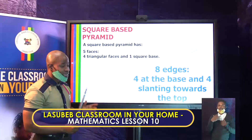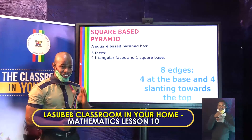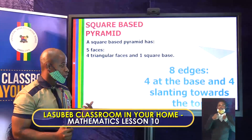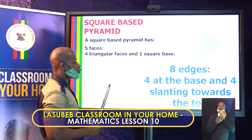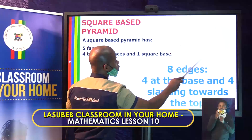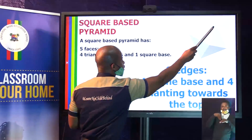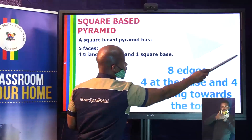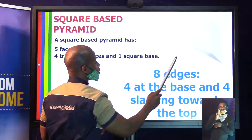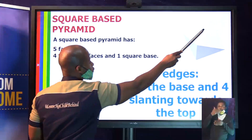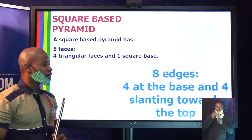It has eight edges. Don't forget that the edges are the straight lines you can find on the shape. From the base at the back: one, two, three, four — and in front: five, six, seven, eight. These are the eight edges.